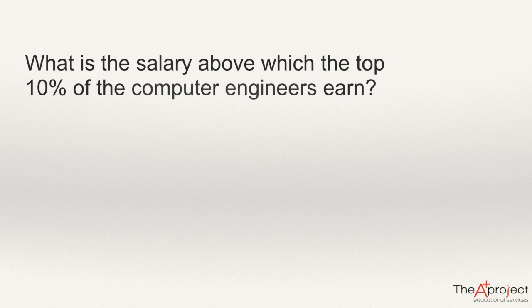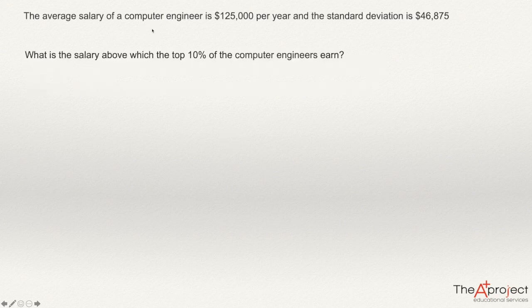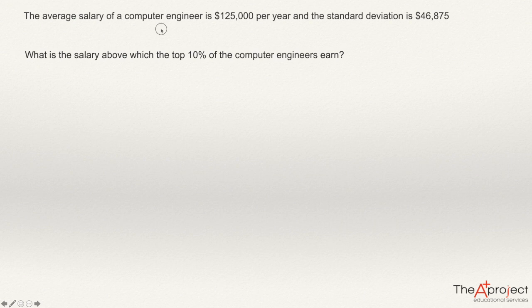The question we are going to solve in this video is: what is the salary above which the top 10% of computer engineers earn? A variation of this question appears in any textbook of statistics. To answer it, we need to know how the salaries of these engineers are distributed — we need information about the probability distribution of engineer salaries. We will assume that the mean salary is $125,000 per year, the standard deviation is $46,875, and that salaries are normally distributed. Knowing these two values, we can answer this question.